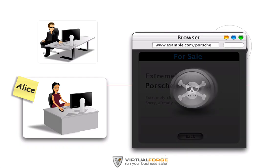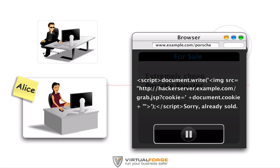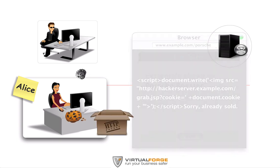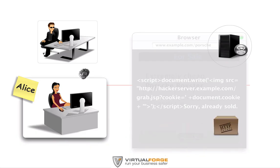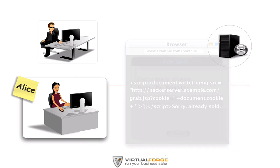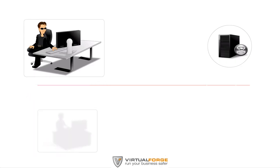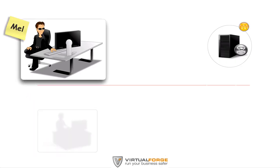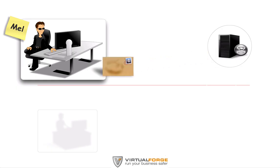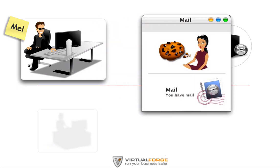Mel's script is now executed in Alice's browser. It will therefore read her cookie and send it off to Mel's web server. Basically, Mel used the vulnerable car sales web server to spread his attack to other users — in this case, to Alice. Mel's server is programmed to immediately send an email to him when any new cookies are delivered. In other words, Mel receives a cookie just a few seconds after it has been stolen.